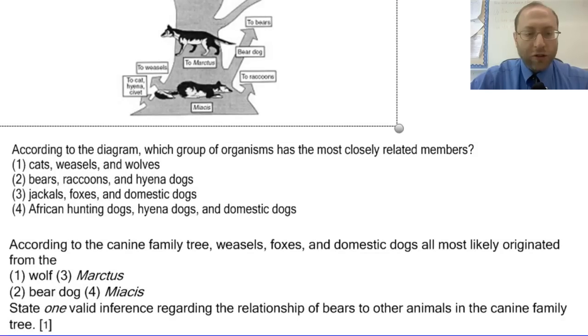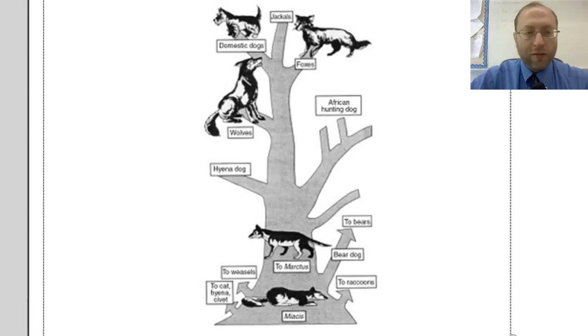The next question: according to the canine family tree, weasels, foxes, and domestic dogs all most likely originated from the... The wolf is off on a branch that does not lead to all of those. The weasels are off on a different branch that's way below, so it can't be that. Marctis is also further off on the main trunk, but the weasels have already gone off from the branch by the time Marctis comes along. Same thing for the bear dog, but myasis, you see, it's there at the bottom, and from there weasels go off as do all of the others. Myasis is the most recent common ancestor for the entire canine family tree, so that one is the answer.